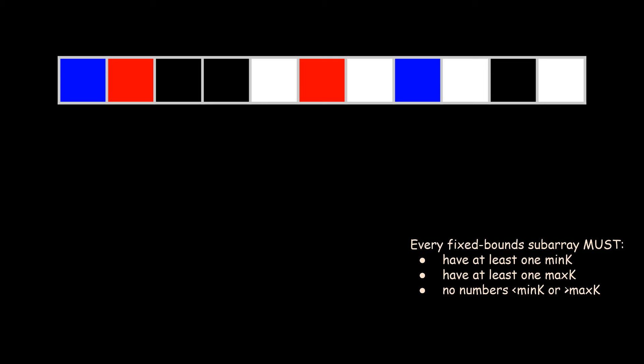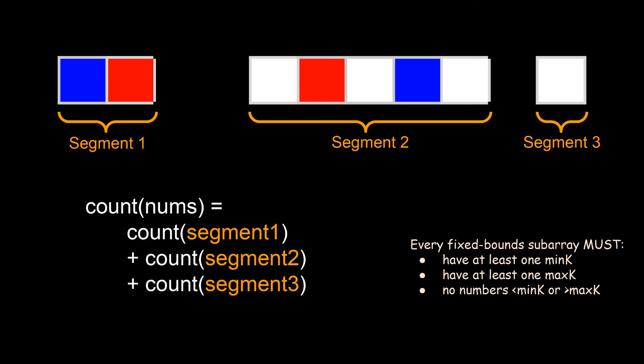Looking at a slightly larger example, we start to notice that these black blocks essentially partition nums into several different segments. A valid subarray must never cross any of these black blocks. So it stands to reason that we can think about each of these segments independently. So the number of valid subarrays for nums would simply be the sum of the valid subarrays for all the different segments. Now we've gone through quite a bit of information here. So let's do a quick recap.